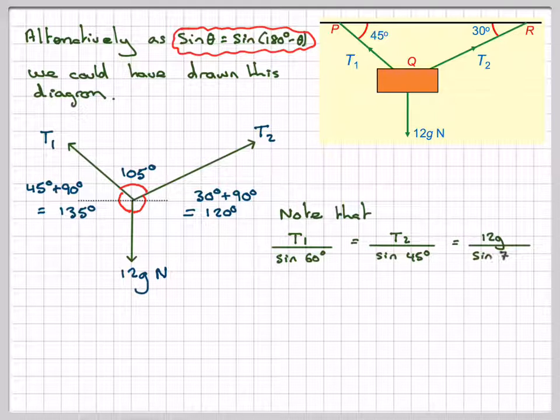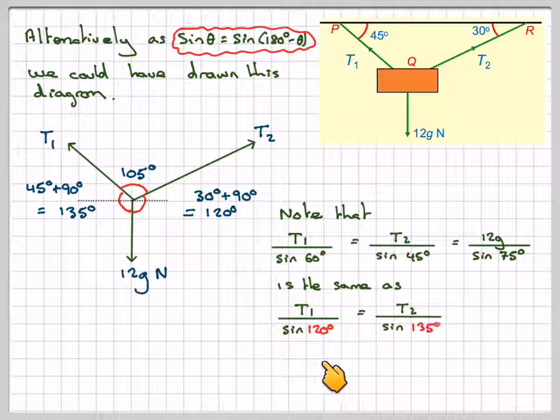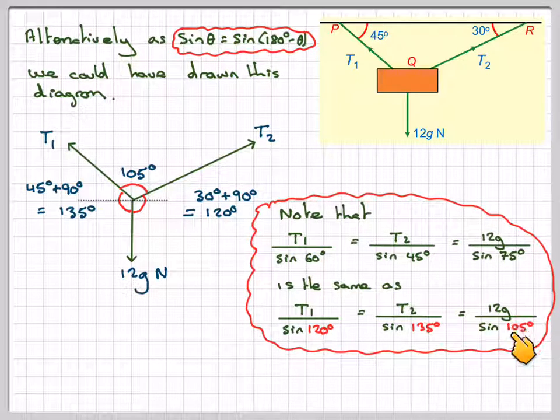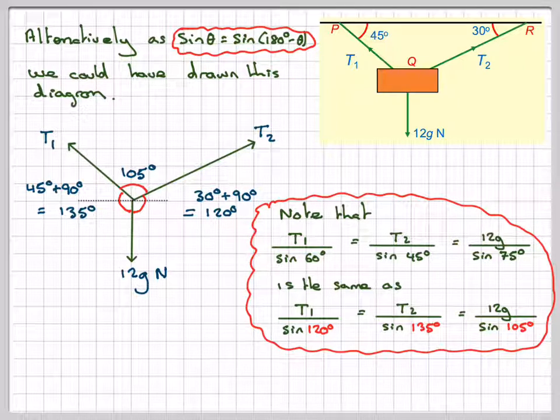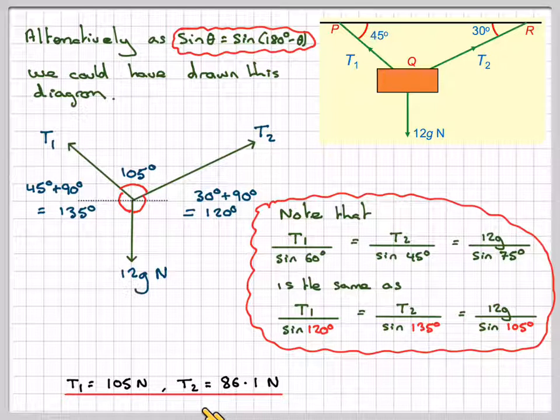Again, we can use the sine rule. T1 over sin 60 equals T2 over sin 45 equals 12G over sin 75. But it's exactly the same as doing T1 over sin 120, T2 over sin 135, 12G over sin 105, using this idea up here. Again, it would give you the same answer: T1 is 105 Newtons, T2 is 86.1 Newtons.